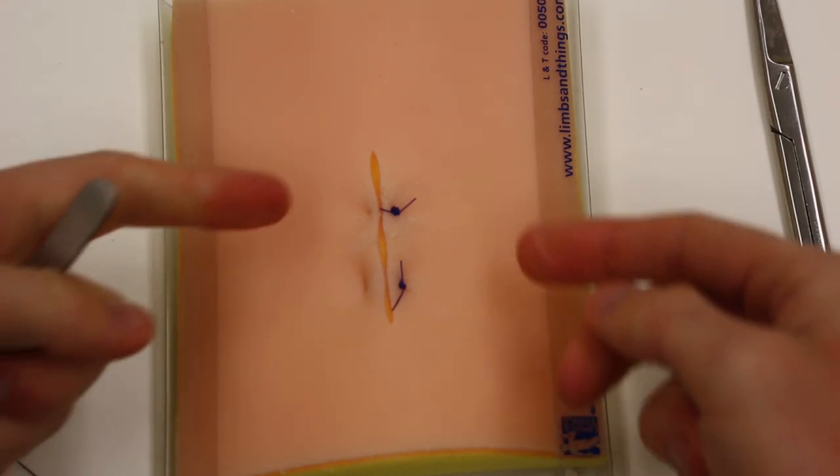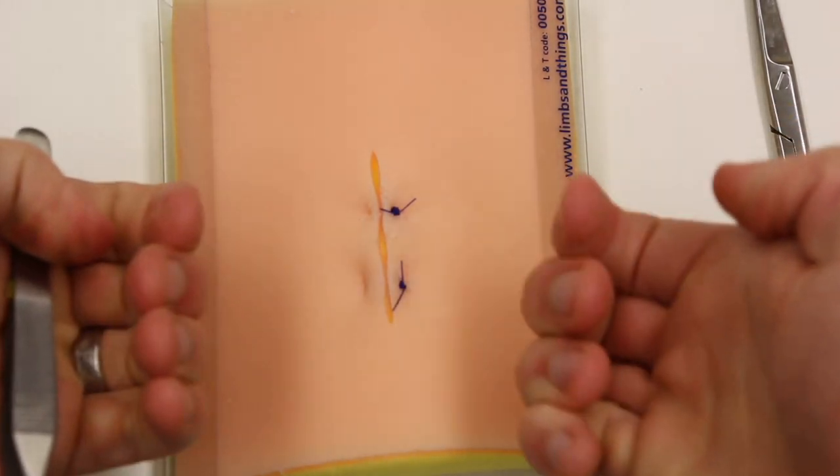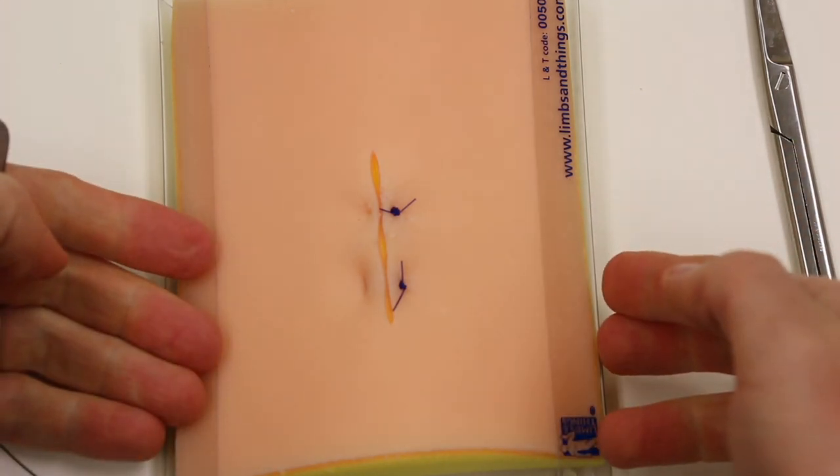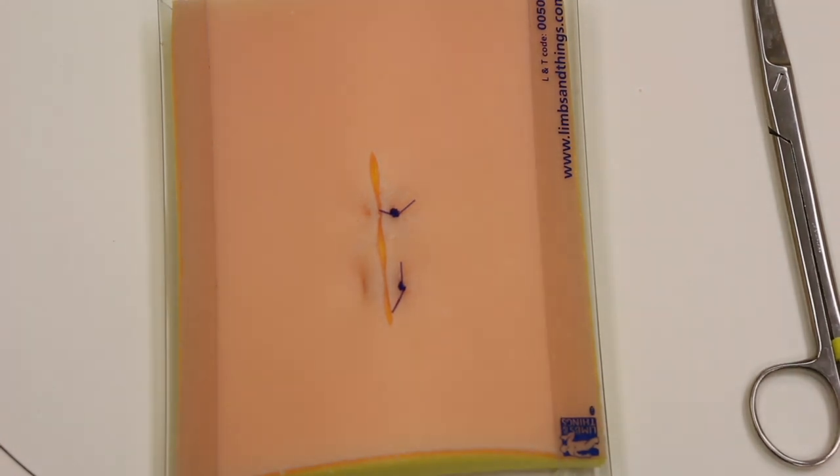So both suture kinds, both the vertical and the horizontal, gives you strong skin eversion, strong resistance to tension. And both are useful in those cases like fasciotomy closure, where you need to be able to handle that tension.